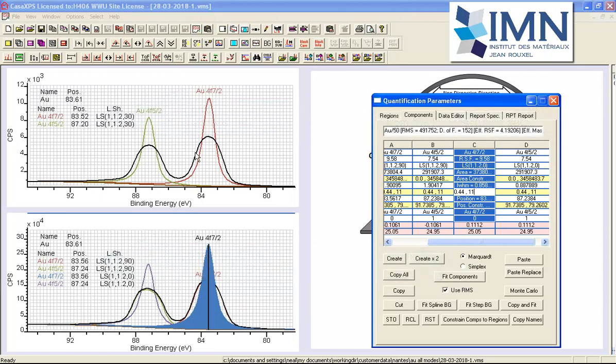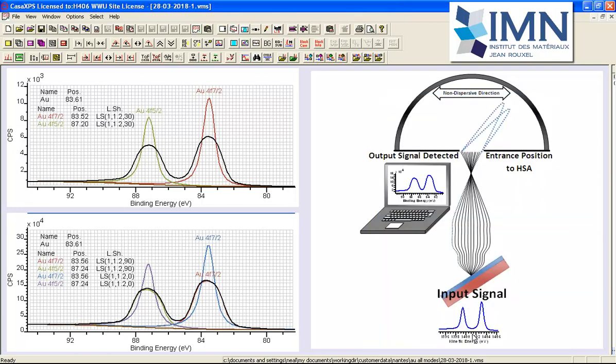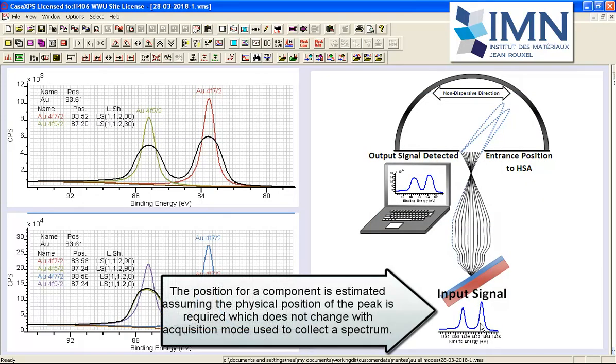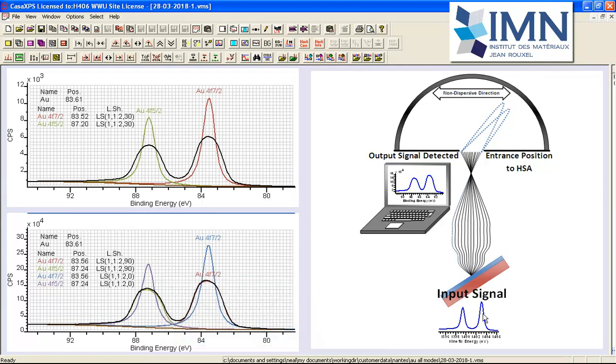So the idea is that underlying this measurement we have a position for these peaks. And then the instrument modifies that position by these operations that are very similar to what I've just illustrated. And as a consequence, we end up with a peak maximum that may move compared to where the actual peak position is. So if we trace the peak position back to the underlying shape, then we have a better estimate of what the true position is for these gold 4F peaks.